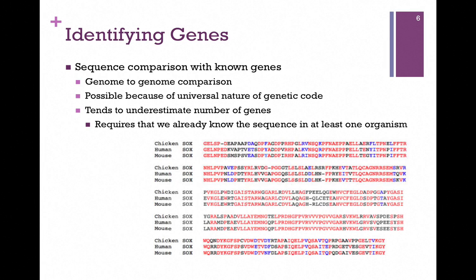The other method that we could use is to institute a sequence comparison. So we take our sequence of a known gene, and we're going to compare that to genomes of other organisms. In the sequence alignment that we're looking at here at the bottom of the screen, we have the XOS gene from chicken, human, and mouse,